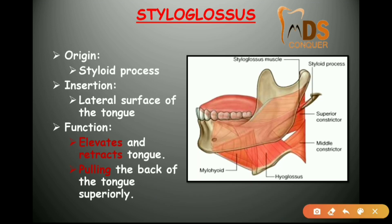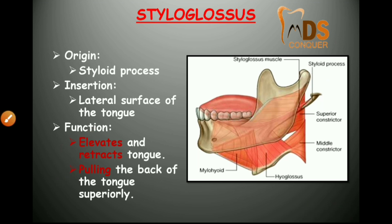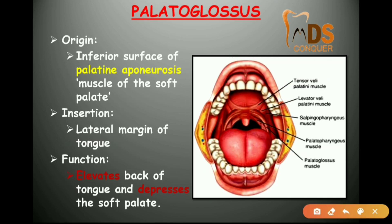The styloglossus originates from the styloid process, inserts into the lateral parts of the tongue, and elevates and retracts the tongue, pulling it back superiorly. The palatoglossus originates from the palatine aponeurosis and inserts into the lateral parts of the tongue. All muscles of the tongue are paired. The palatoglossus elevates the tongue and depresses the soft palate.